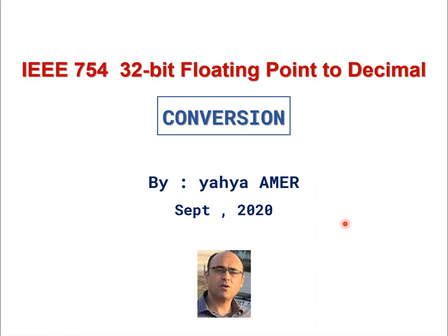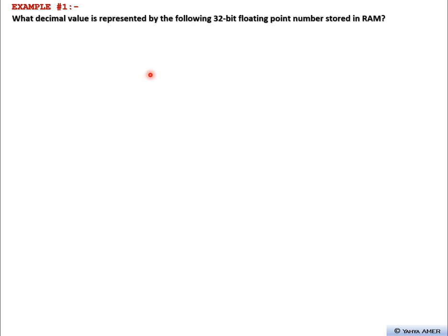Hello everyone, today we're going to talk about how to convert a 32-bit floating point number represented in IEEE 754 format to its equivalent decimal value. We'll do that by checking two examples. We start with example number one, which asks: what decimal value is represented by the following 32-bit floating point number?